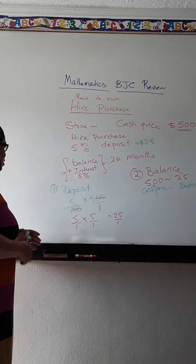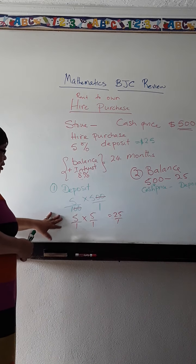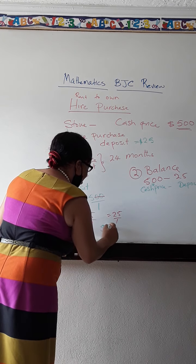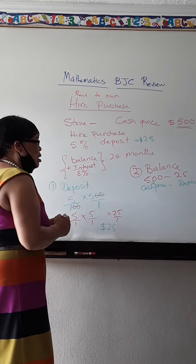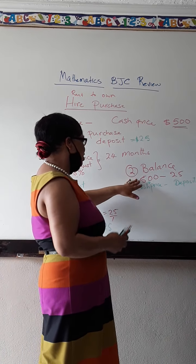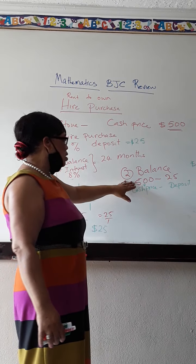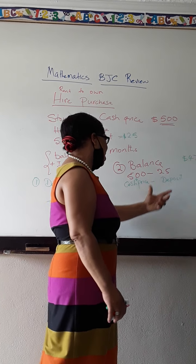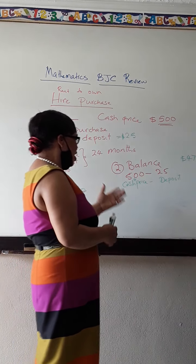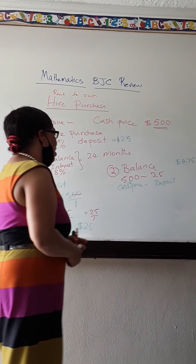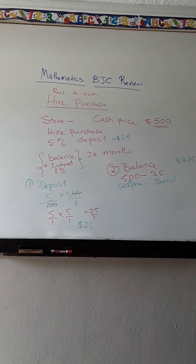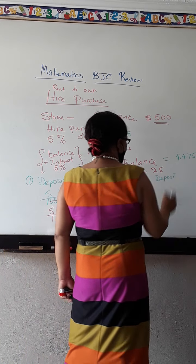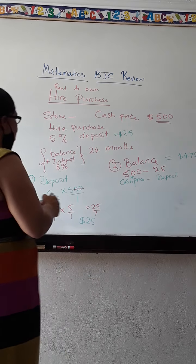How do I get my balance? My balance is going to be my cash price, which in this case was $500 minus my deposit, which is $25. And if I take $500 and minus $25, I'm going to get $475. So my balance is going to be $475.